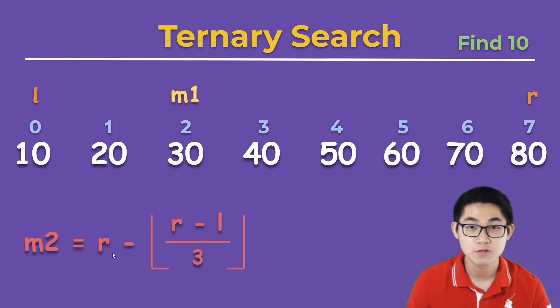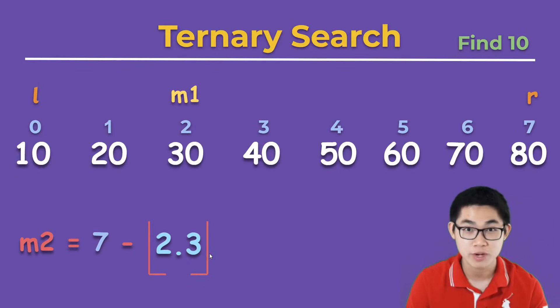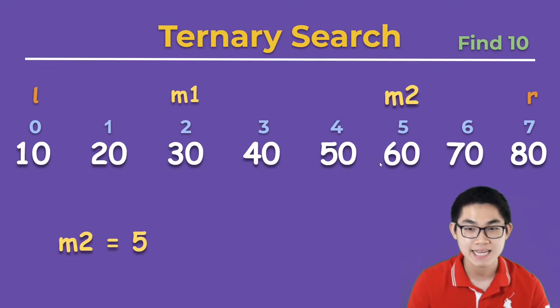And here is the formula to find the second mid. r is 7, and l is at 0. So you get 7 divided by 3 again, and that's 2.3. Round it down, which gives you 2. And then m2 is at index 5.